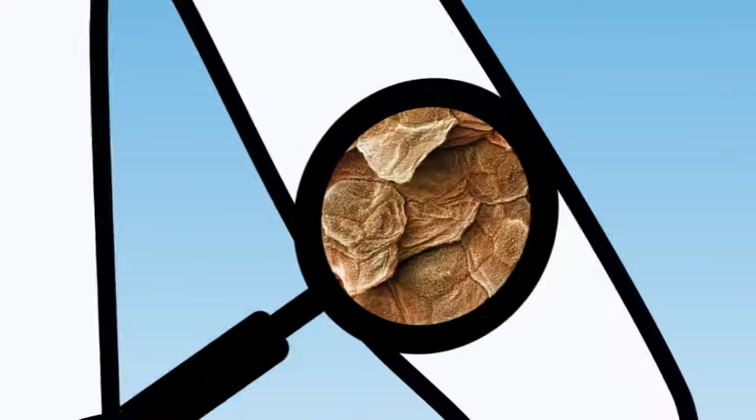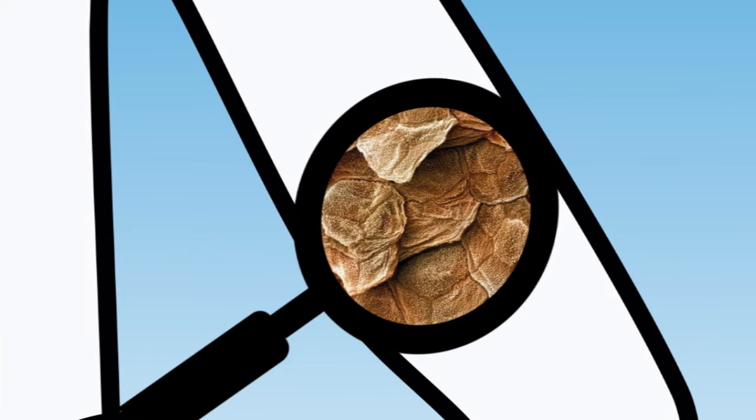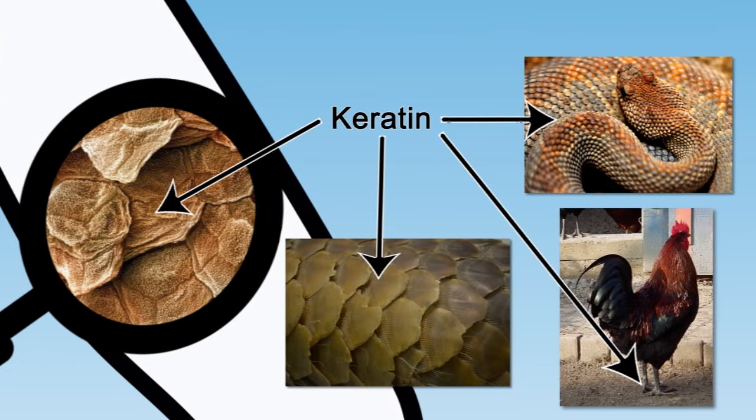Except all we have to do is take a closer look at our silky smooth skin to see that it actually is a small patch of scaly armor. Those scales are made out of the same hard protein, called keratin, as the scales of pangolins and other animals.